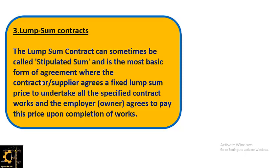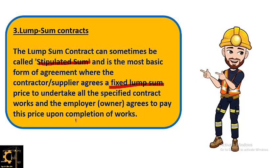The third one is lump sum contract. As the name tells us, it involves paying a single total amount in one go for the entire project. The lump sum contract can sometimes be called a stipulated sum and is the most basic form of work agreement, where the contractor agrees to a fixed lump sum price to undertake all specified contract works, and the owner agrees to pay this price upon completion. All specifications, terms and conditions are already specified in the contract.